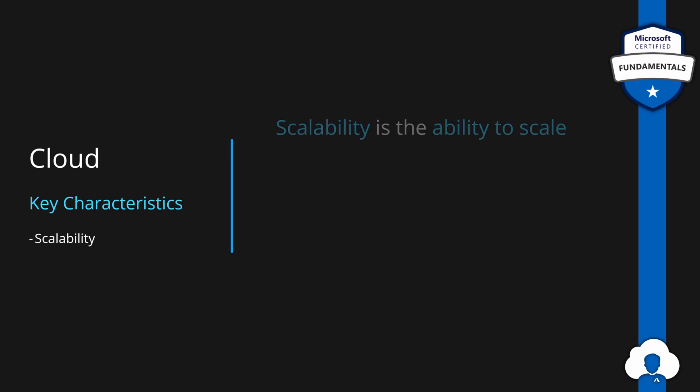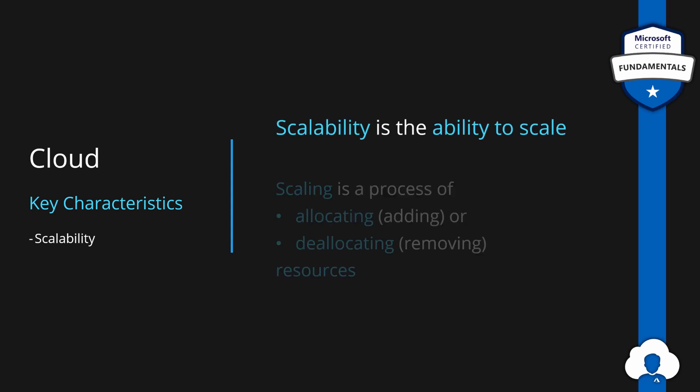To summarize, scalability is an ability of the system to scale. Scaling is a process of adding or removing resources. Remember that resources might mean virtual resources like CPU and memory, but also specific instances of those resources.